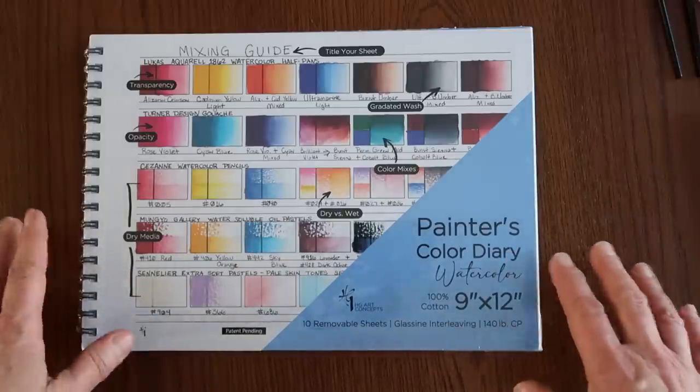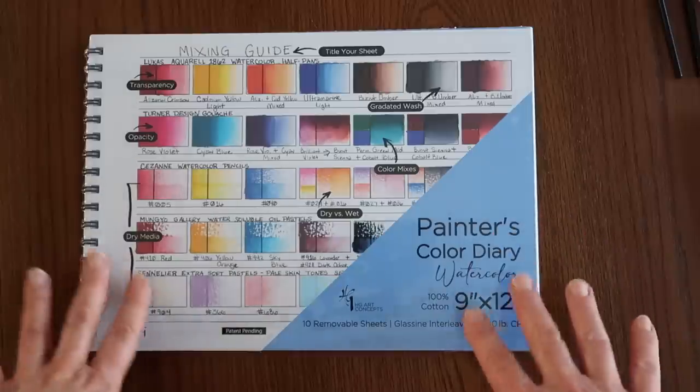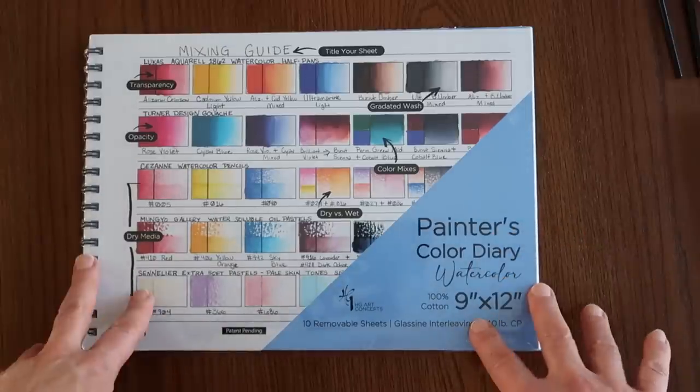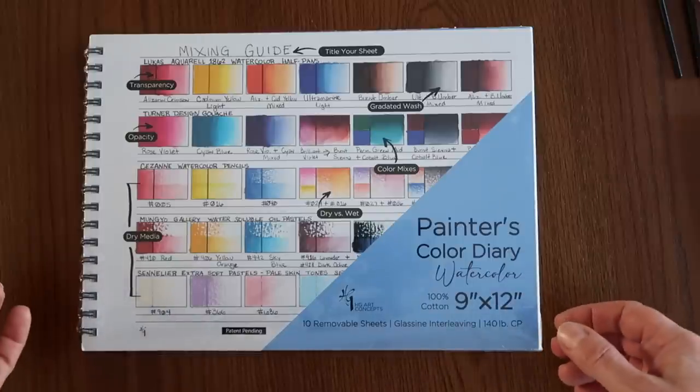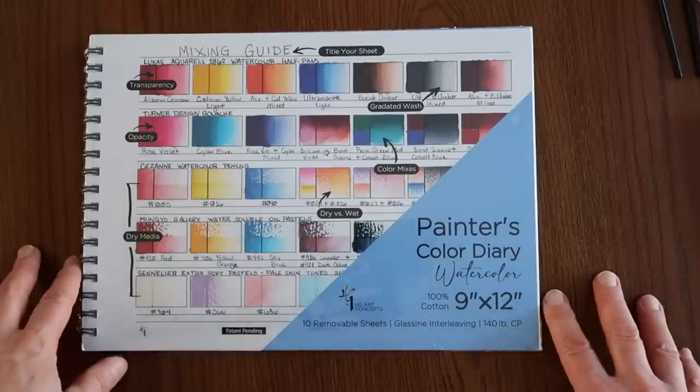But swatches are all over the place. Or we've got a journal that has a whole bunch of pages in the back or the front with swatches in them. And then what do you do when the journal is full?